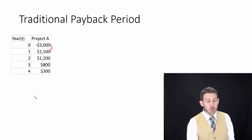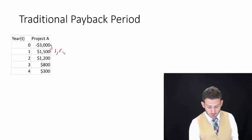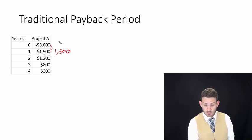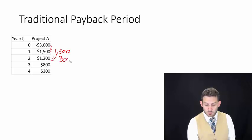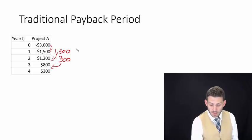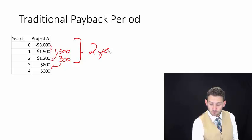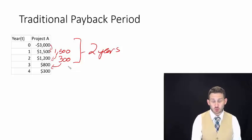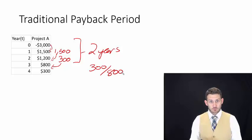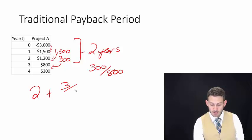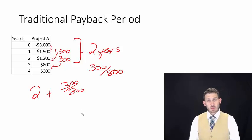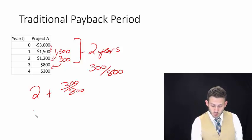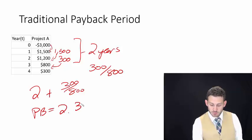In year one, it's going to pay us back $1,500, so that means there's going to be $1,500 remaining. We then track that down to year two, and year two still leaves us with $300 remaining. Then it will get fully paid back in year three. So we have two full years, plus a partial year. That partial year is $300 divided by $800, which is 0.375. So our total payback period is 2.375 years.